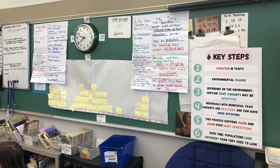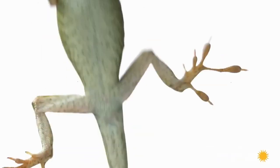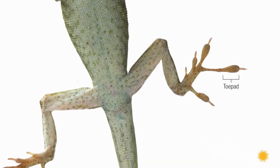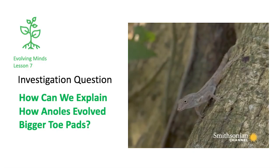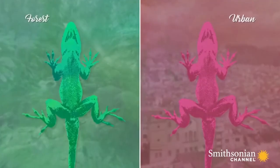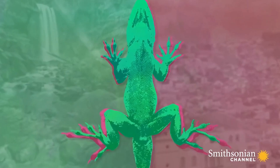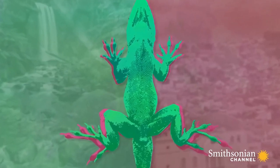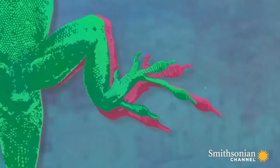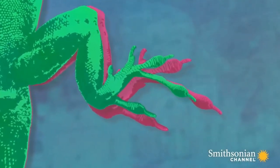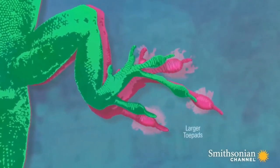Students see if their model can explain real cases. How can we explain how anoles evolved bigger toe pads? Having tested the model in these scenarios, students find that their model of natural selection can explain how any population could change over time.